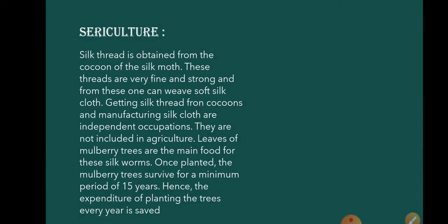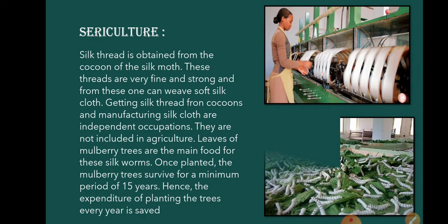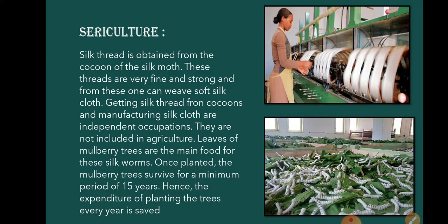The next is called sericulture. Silk thread is obtained from the cocoon of the silk moth. These threads are very fine and strong, and from them one can weave soft silk cloth. Different organizations supply silk moth eggs to the farmers. Leaves of mulberry trees are the main food for silkworms. Once planted, the mulberry trees survive for a minimum period of 15 years, so the expenditure of planting the trees every year is saved.